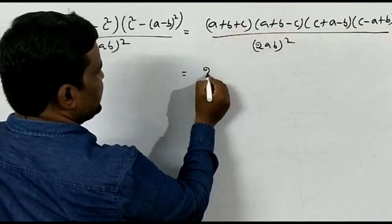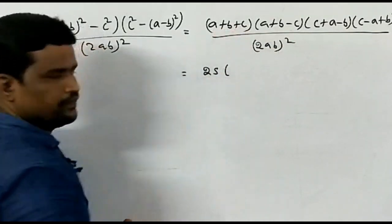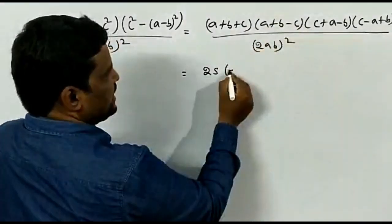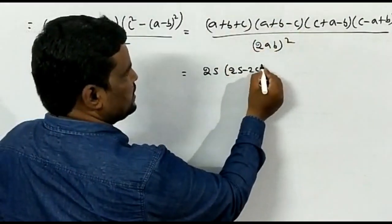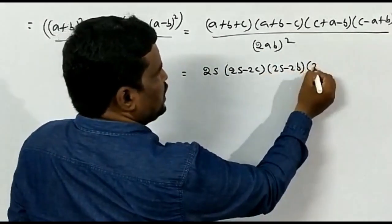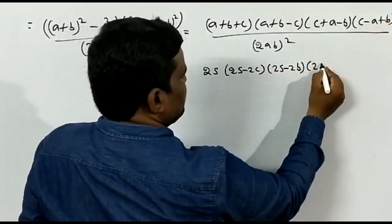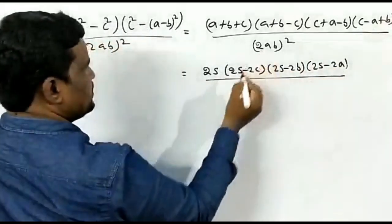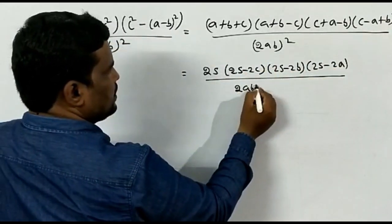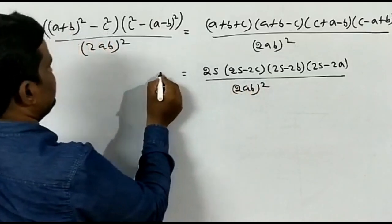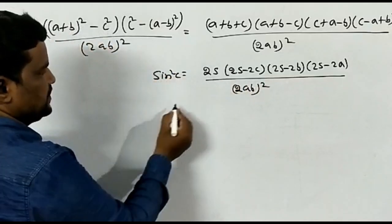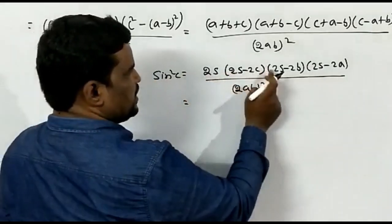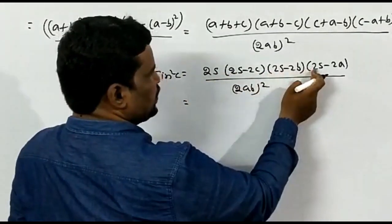Applying difference of squares again: (A+B+C)(A+B−C)(C+A−B)(C−A+B) / (2AB)². Substituting A+B+C = 2S: the factors become 2S, (2S−2C), (2S−2B), and (2S−2A) respectively.